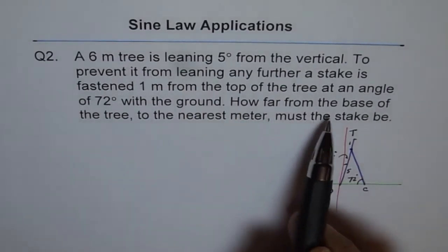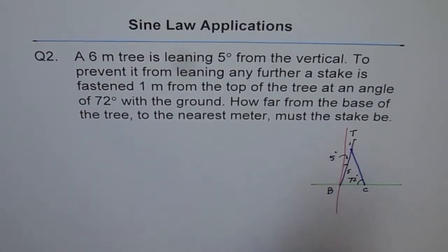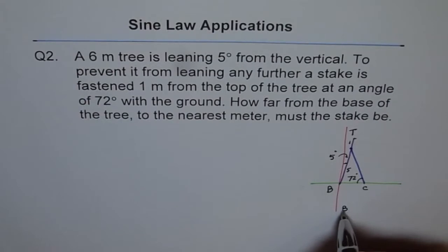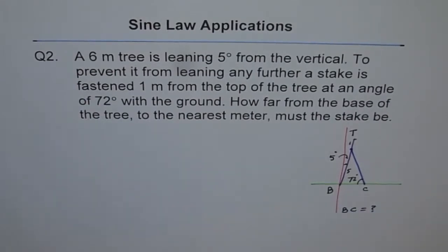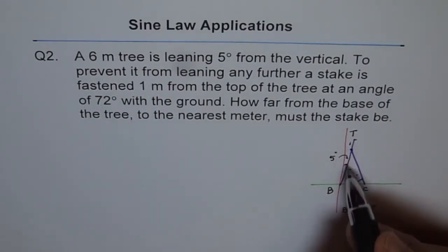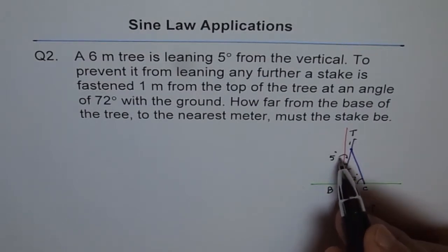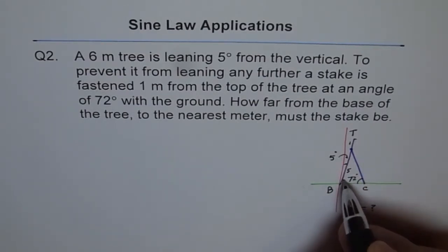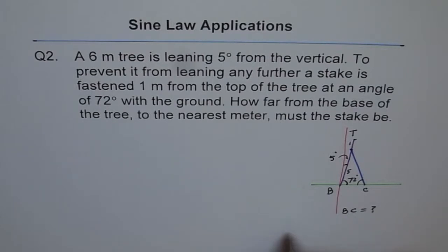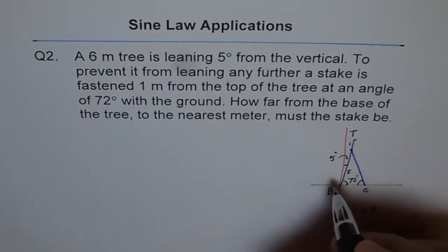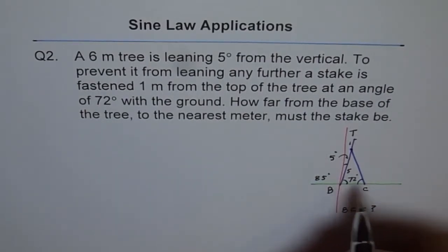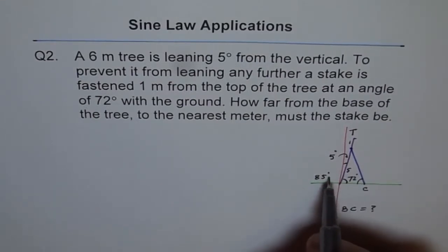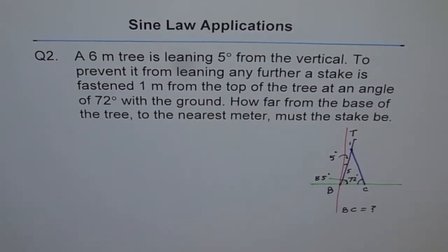We need to find BC, the distance from the base of the tree to the stake. This is not a right triangle since the tree is leaning at five degrees. The angle at B — between the ground and the tree — is not 90°, it is five degrees less, so that angle is 85 degrees.